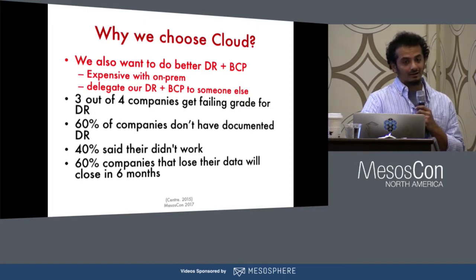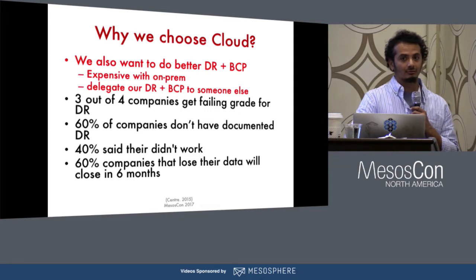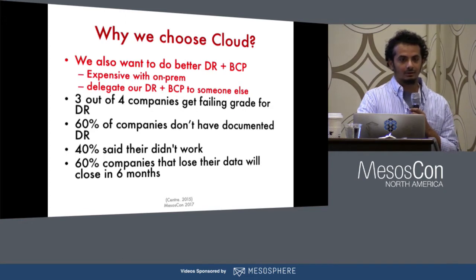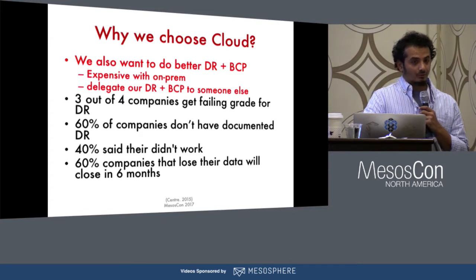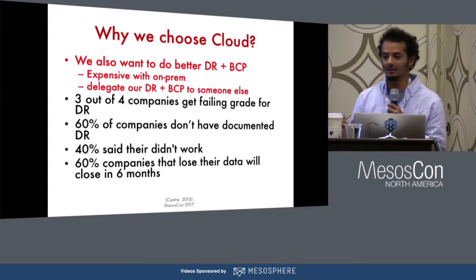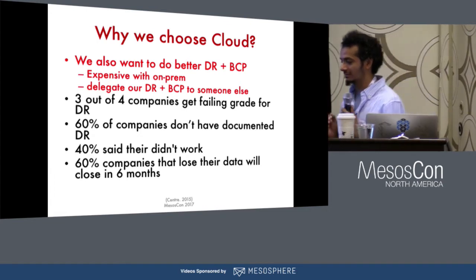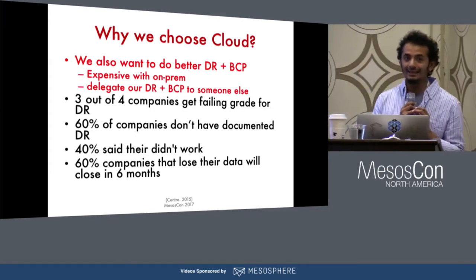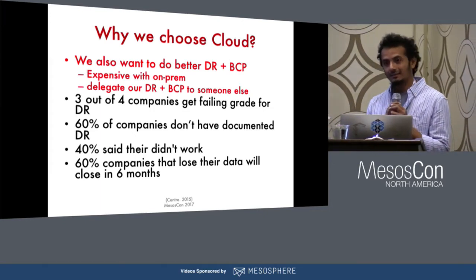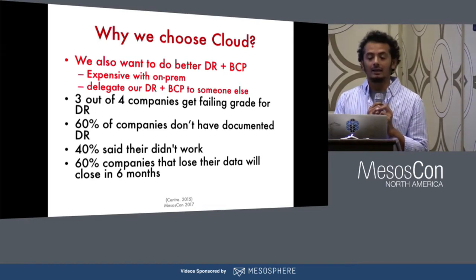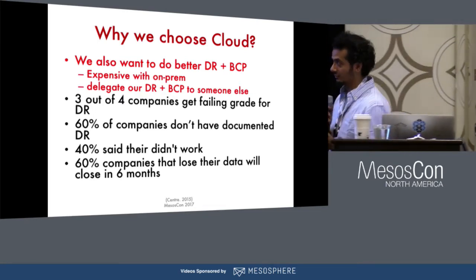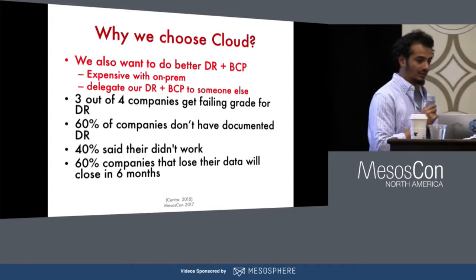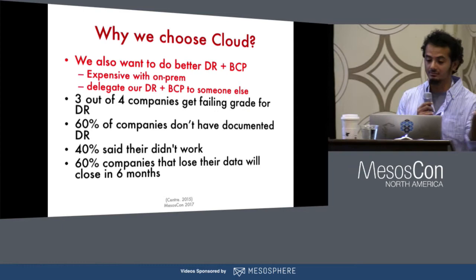Three out of four companies get a failing grade for DR. They might have a plan, but if you actually try to execute or test it, that's when you realize their DR plan is all messed up. And 60% of companies that have a DR don't have it documented — everything is in people's minds. They would basically know how to bring it back up if something happens. And 40% said the DR plan didn't work. Also, 60% of companies that face a data loss incident will close down within six months.